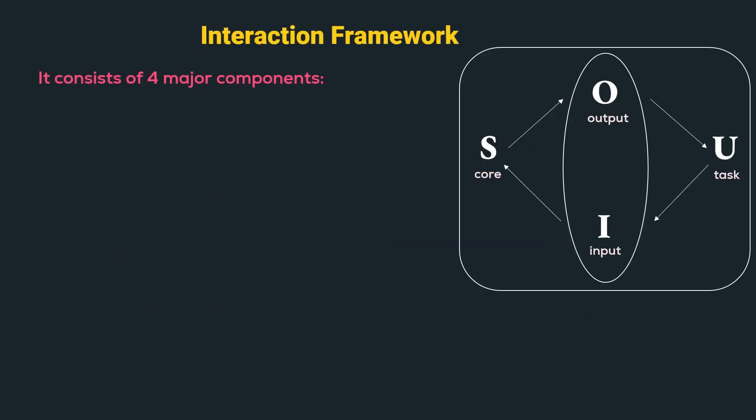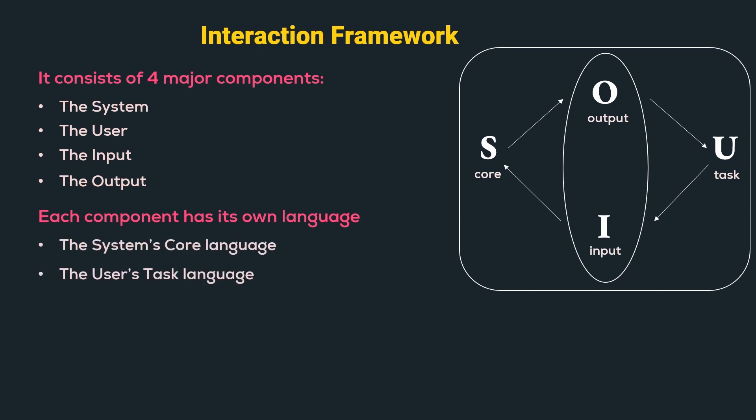The interaction framework consists of four major components which are the system, the user, the input and the output. Each component has its own language which are the system's core language, the user's task language, the input language and the output language.